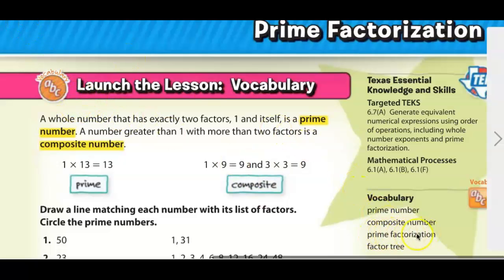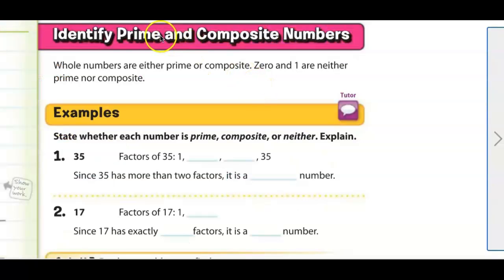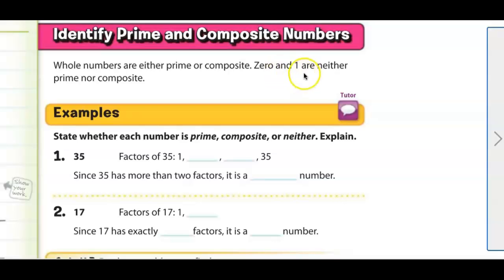We're going to see examples of prime factorization and factor tree on the next page. To review: whole numbers are either prime or composite, but there are two exceptions — zero and one are neither prime nor composite. Zero does not have two factors that multiply together to equal zero; it has an infinite number of factors and cannot be divided by itself. One is also not prime because it only has one factor: one times one is one, the same number repeated.